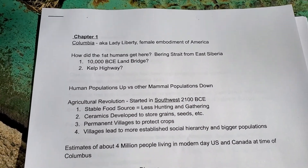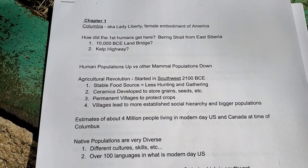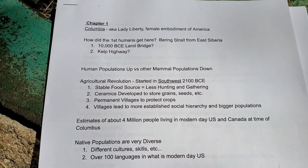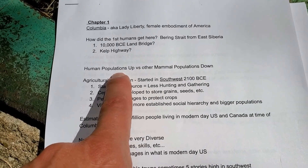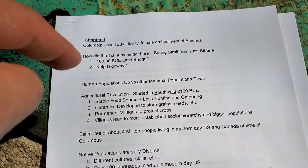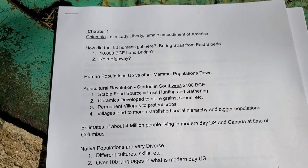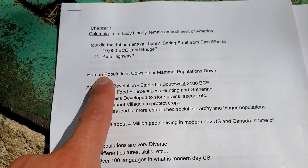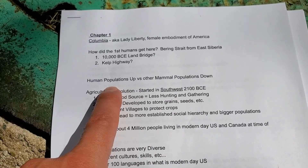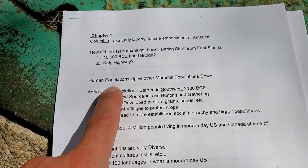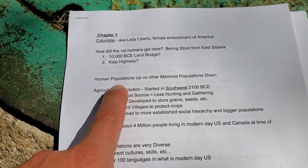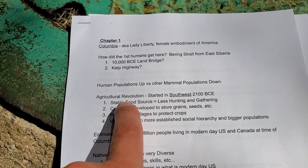We know these early people were not just gathering but also hunting. Archaeological evidence shows that as human populations rose in the Americas, other mammal populations declined — they were hunting predators and hunting for meat. You can find animal bones with cut marks that appear to come not just from removing meat but from spear points entering the bone, which is further evidence of active hunting.